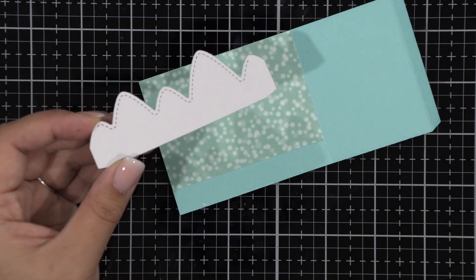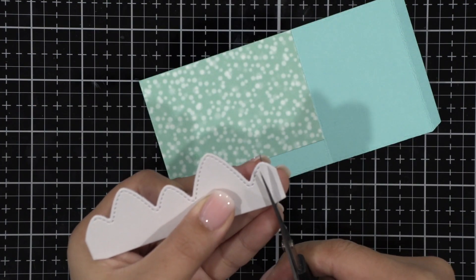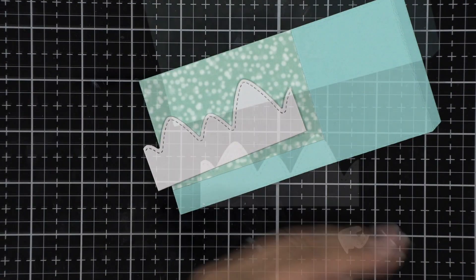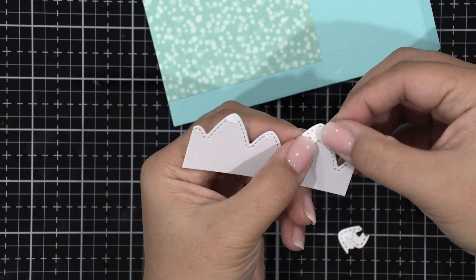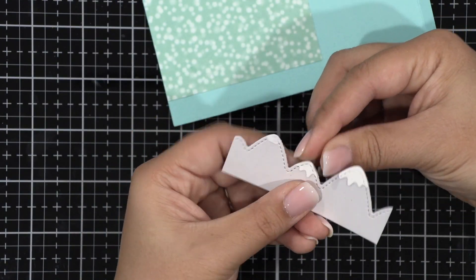I adhered that down and using my fog cardstock, I went ahead and cut out this mountain from the mountain add-on die, and then I'm going to add some white snow caps.